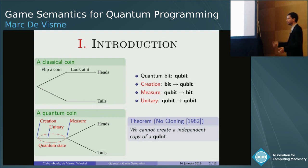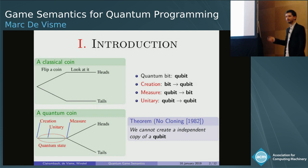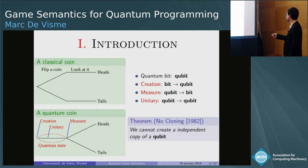So creation, measure, and unitaries are the three main operations that you will have in quantum computation. Another important property of quantum programming is the no-cloning theorem, which states that you can never duplicate any quantum data. Hence you will see later in this talk the use of linear logic to represent that.